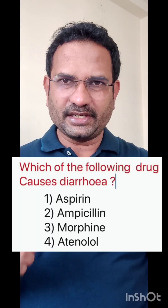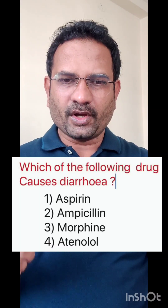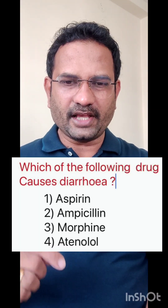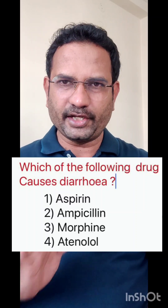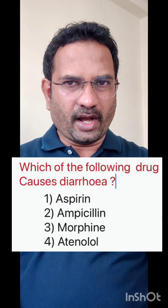Hello everyone, welcome to the concept on superinfection. Let us understand the question first, which is given in a competitive examination. The question is: which of the following drug causes diarrhea? Options given are aspirin, ampicillin, morphine, and atenolol.